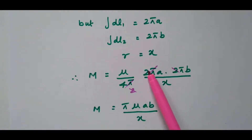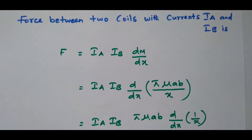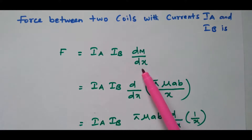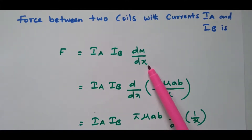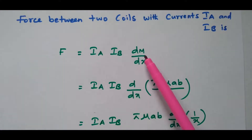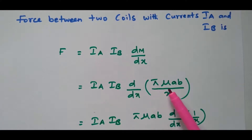After simplification, the 2π terms and 4π cancel, giving the mutual inductance M equals μπab divided by x. Now from this we find the force between the current loops. The force between two coils with currents IA and IB is F equals IA times IB times dM/dx — differentiation of mutual inductance with respect to x. Substituting M equals μπab divided by x, we get F equals IA times IB times d/dx of μπab divided by x.